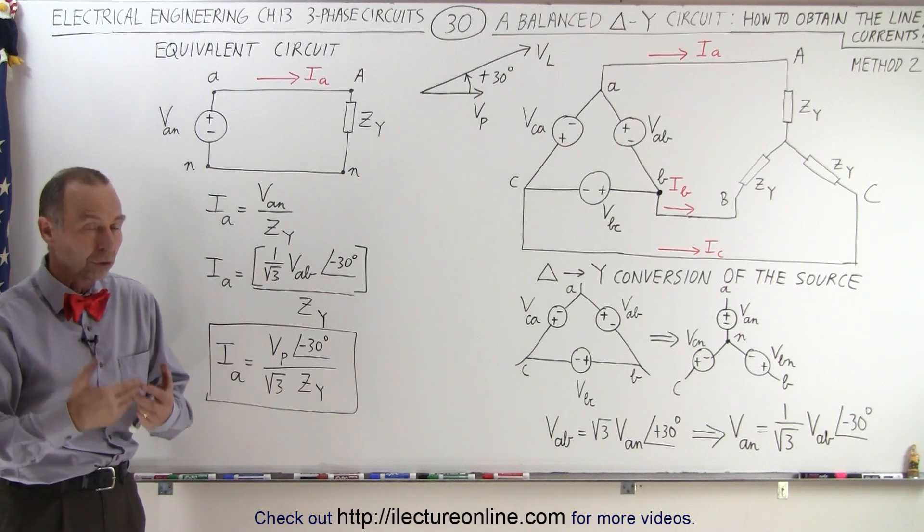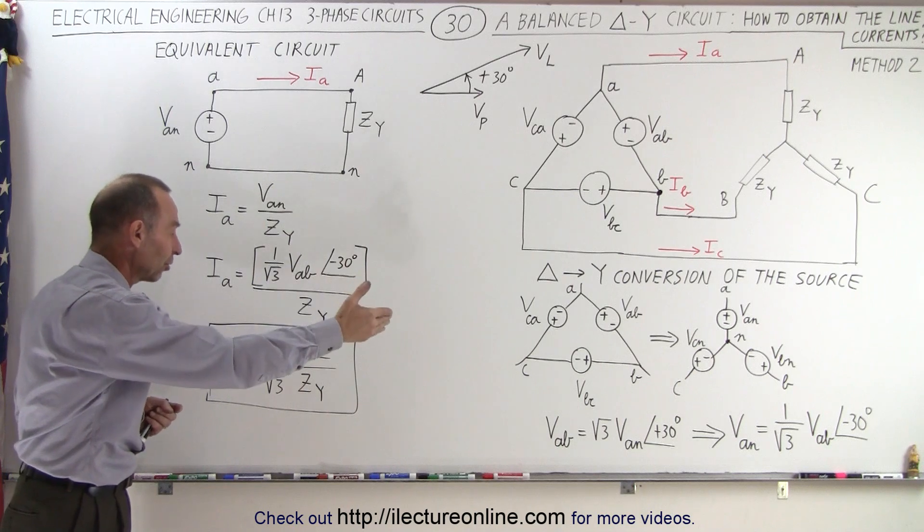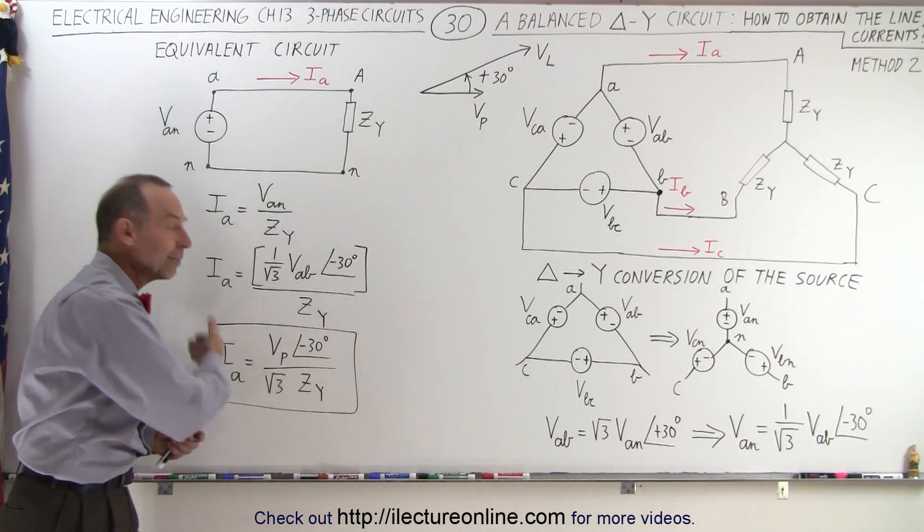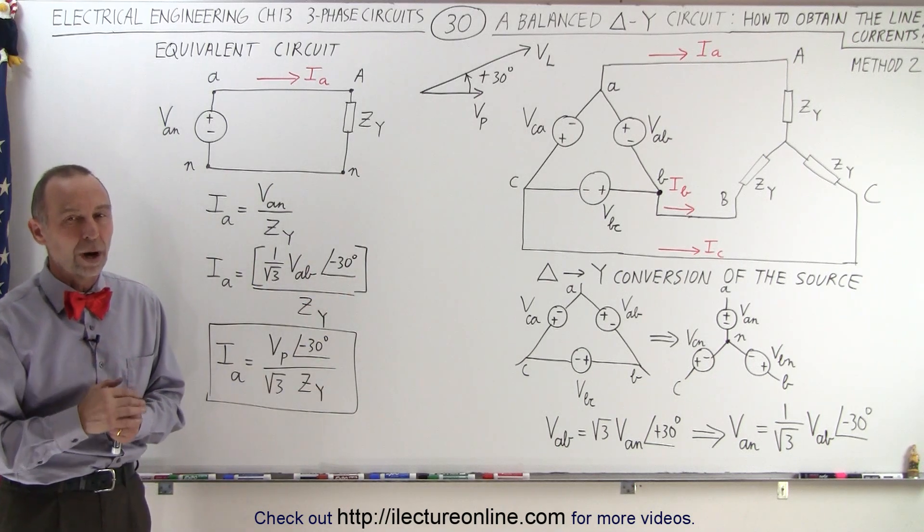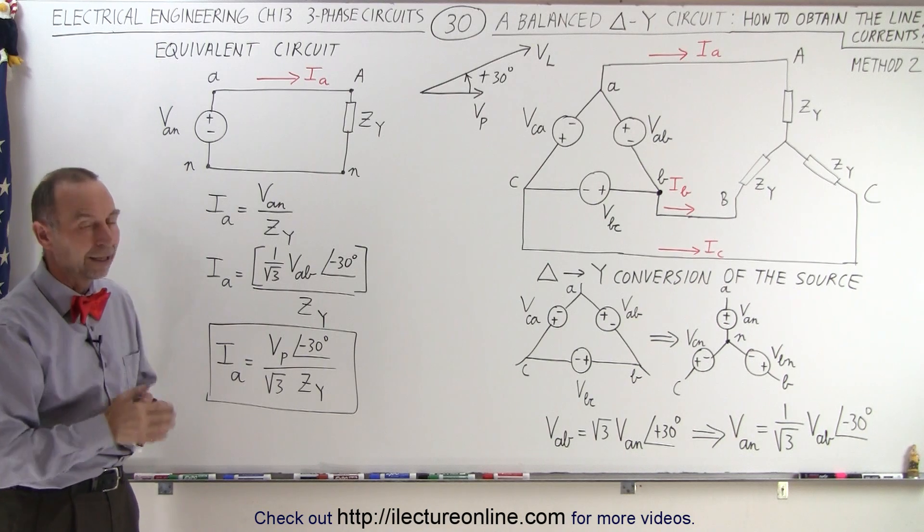And so just like before, using Kirchhoff's rules, here using an equivalent circuit, we can come up with the very same line current for a delta Y circuit, and that is how it's done.